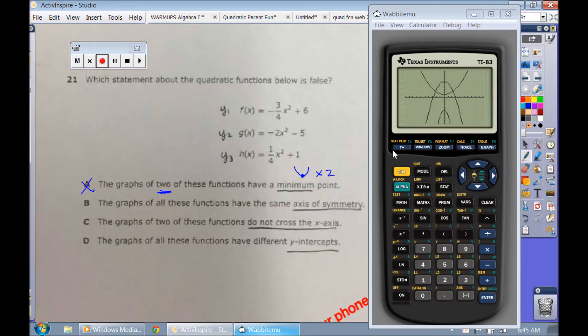What about the same axis of symmetry? Yeah, it looks like that could be true. So we're going to go put a question mark next to the ones that we think are true. Because in this problem here, it's not asking what is true. It's asking for what is false. The graphs of these two functions do not cross the x-axis. The graphs of two. Do I have two of them that don't cross the x-axis? That is true. I do have two that don't cross the x-axis. I have one that's going up above the x-axis and one that's going below. So that's actually true.